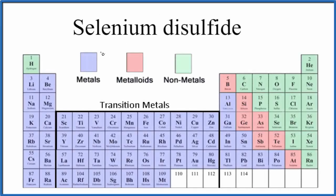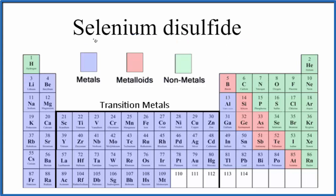In this video we'll write the formula for selenium disulfide. The first thing we need to know is selenium — that's a nonmetal — and then sulfide, that's from sulfur, which is also a nonmetal. Two nonmetals gives us a molecular compound, also called a covalent compound.